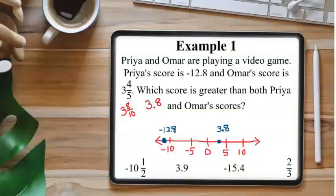Take a second to check and see if you see a number that would be to the right of 3.8 on the number line. It's 3.9, so 3.9 is the correct answer.